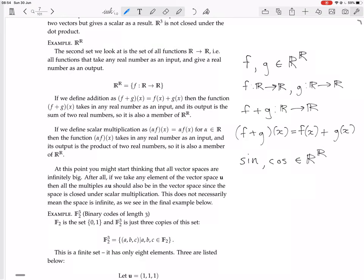The codomain, the place where the outputs are, are real numbers. Now, if you add sine and cos, you get another function from reals to reals, of course.